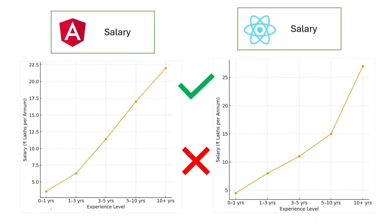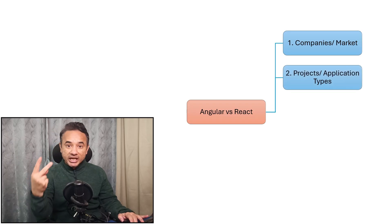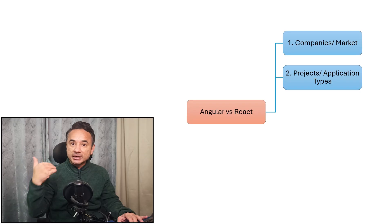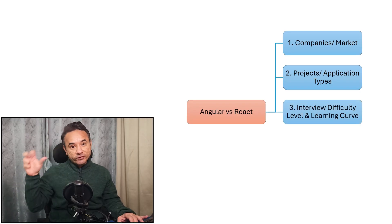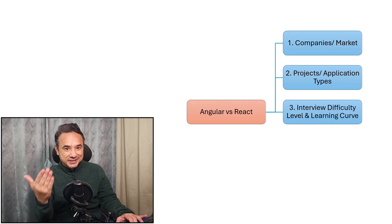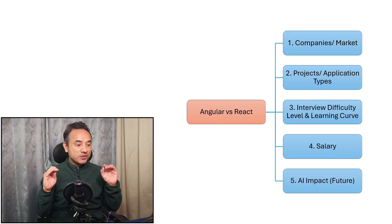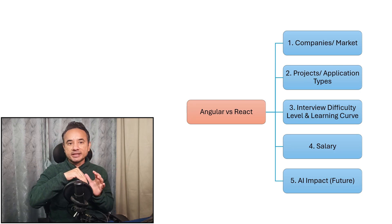You will also know which technology gets a higher salary and which gets a lower one. Today I am going to compare them side by side based on these five factors. First, which type of companies prefer Angular, which prefer React. Second, what type of applications are built in Angular and what built in React. Next, what is the interview difficulty level and which one is more difficult to learn. Next, the favorite one, what is the salary in them. And finally, I will discover how AI will impact them.